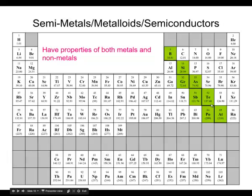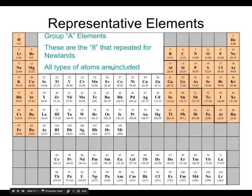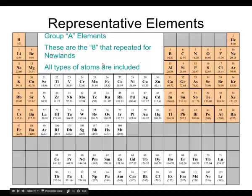The metalloids are the elements that touch the stair-step, with the exception of aluminum. Aluminum is most definitely a real metal — it is not a semi-metal at all. We also have a group called the representative elements. They're the elements that follow the patterns and rules of the periodic table. They include the first two columns and the last six columns.